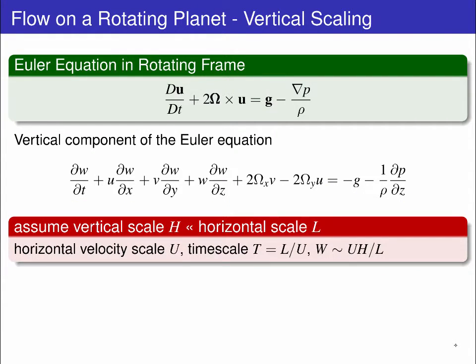We would like an idea of the magnitude of these terms and do so with the usual scaling procedure. We can assume that the vertical scale H is very much smaller than the horizontal scale L. The horizontal velocity scale is U. The time scale T is L on U. And from continuity, the vertical velocity scale W is UH on L.